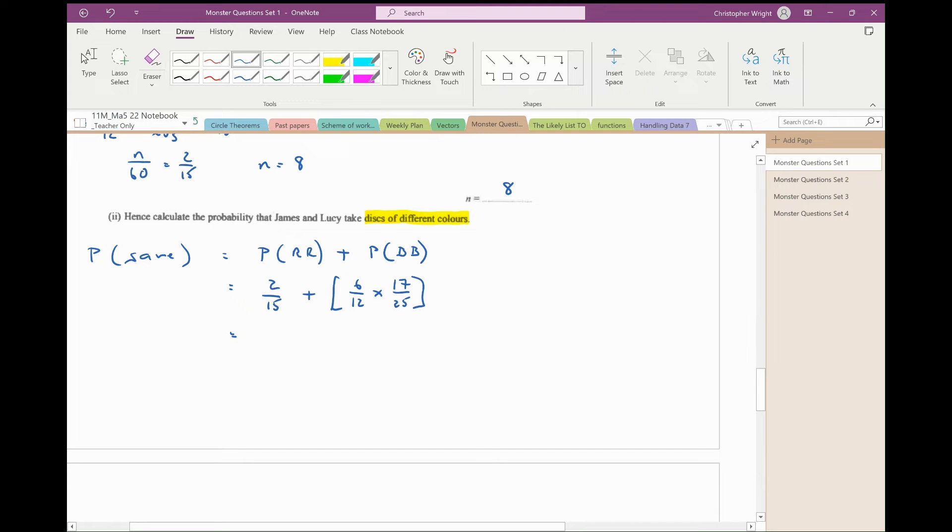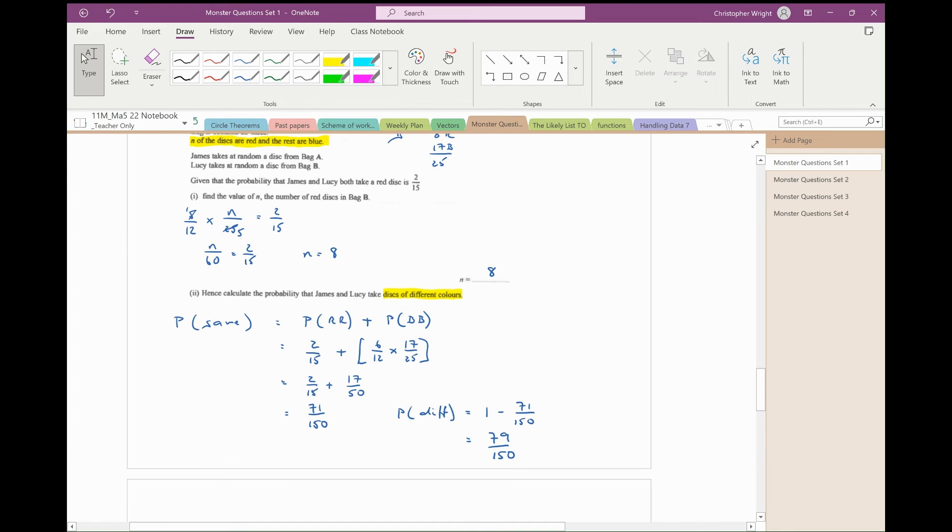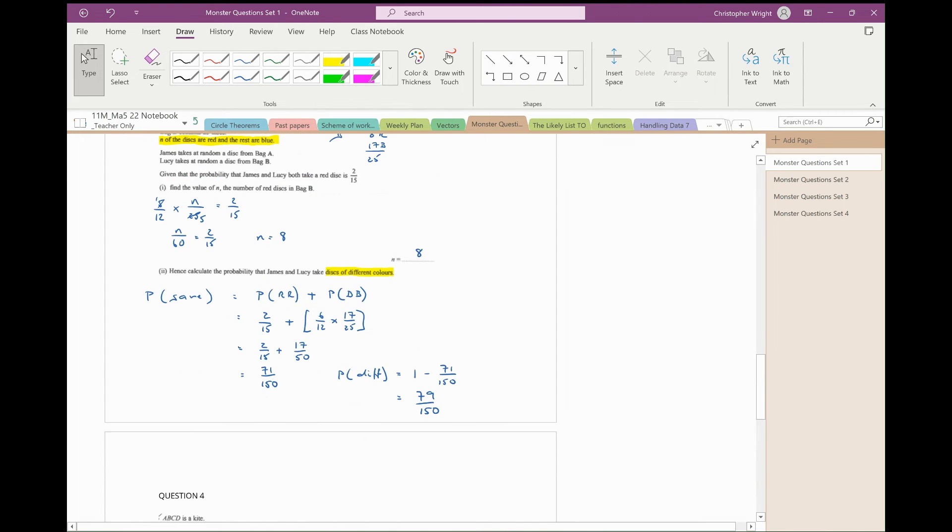A little bit of maths: the probability of them both taking the same disc is 2 fifteenths plus, that's a half, so that's plus 17 over 50. Let's stick that into my calculator: 17 over 50. So the probability of them both taking the same disc is 71 over 150, so the probability that they'll take different ones is 1 minus 71 over 150, which is 79 out of 150. So there is the solution to question number 3.